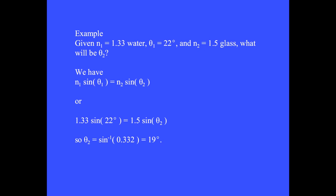We have N1 sine theta1 equals N2 sine theta2, or 1.33 sine of 22 equals 1.5 sine of theta2, where angles are in degrees. This means theta2 is the inverse sine of 0.332, which is 19 degrees.